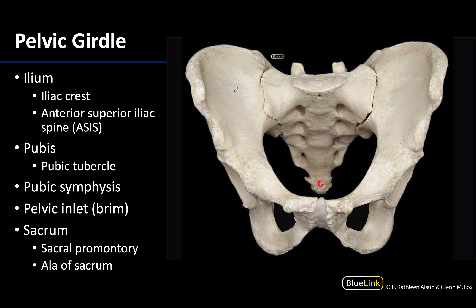Let's start with what we can see of the ilium, which is one of the three major parts of the hip bones. From about here up is going to be part of the ilium — the superior, more fan-shaped portion of the bone.